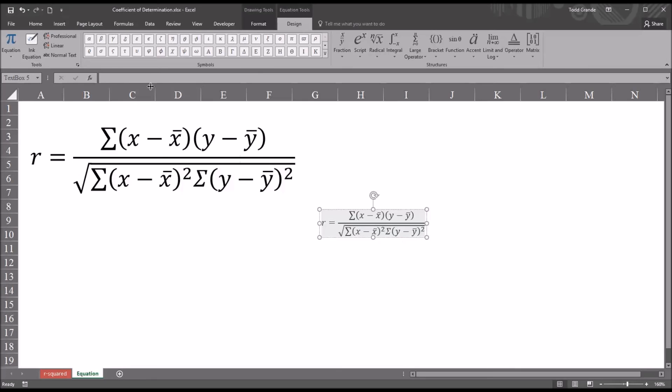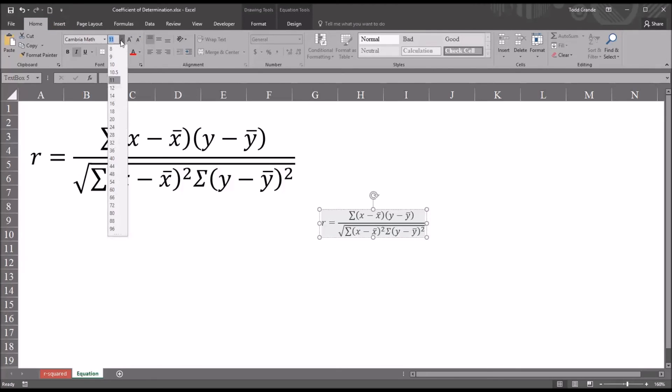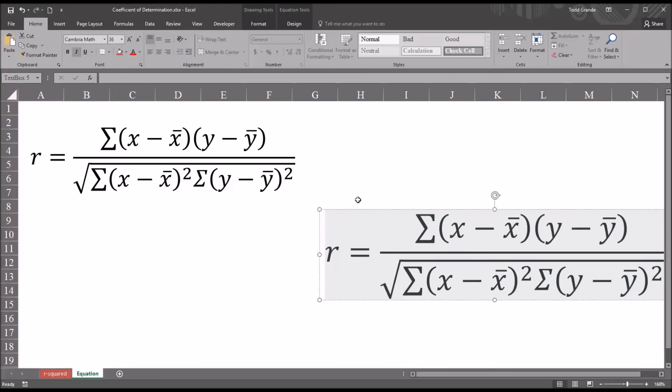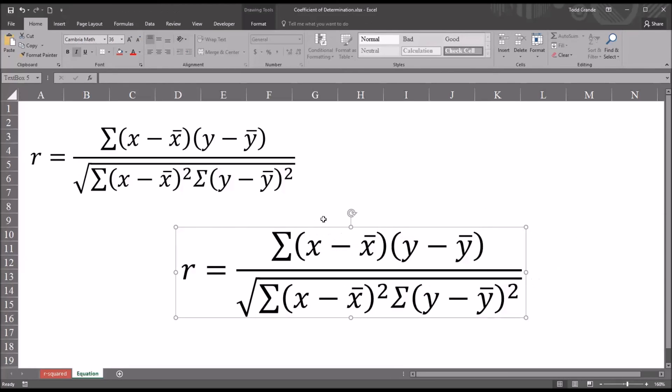And I'm going to make this a little easier to see by increasing the size of the font quite a bit. Let's go to 36. And I'll move this over. And you can see that it now keeps these 2's at the same level. So this equation looks fairly good.